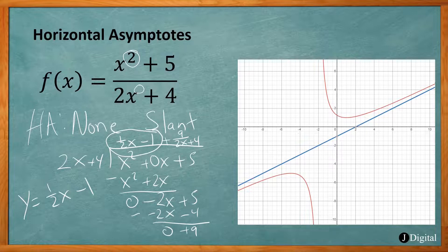So if the degree of the numerator is exactly 1 higher than your denominator, you won't have any horizontal asymptotes, but you will have a slant asymptote. You do polynomial long division to figure out the equation of that slant asymptote.